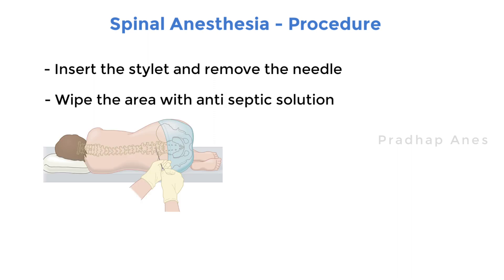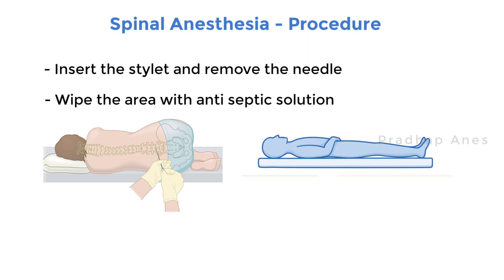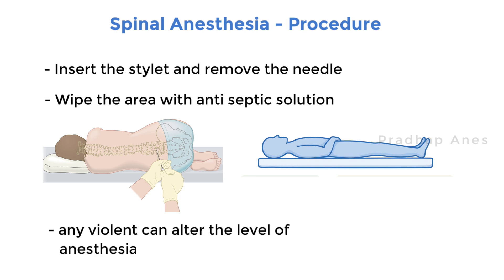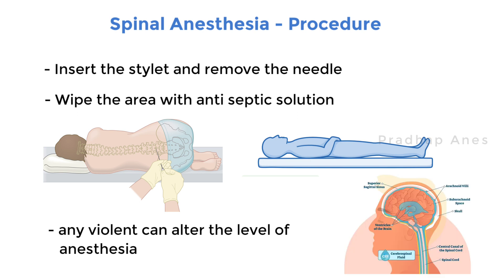As soon as the subarachnoid injection is completed, the patient is brought back to the supine position very gently without jerking movements. Because any violent and jerky movements will cause turbulence — meaning unsteady movement in CSF — and can alter the level of anesthesia.